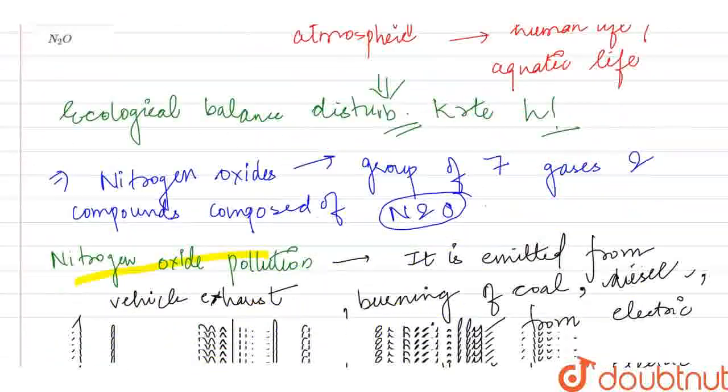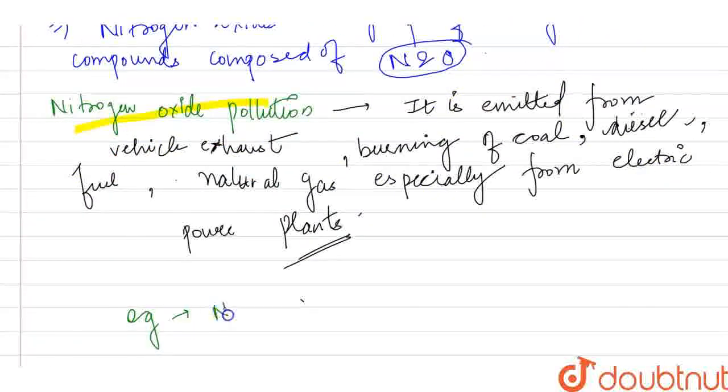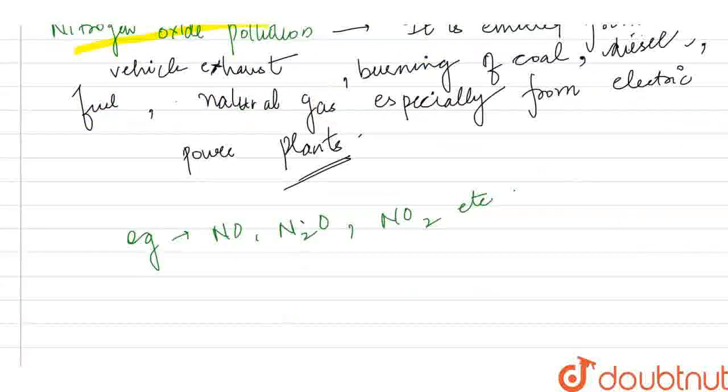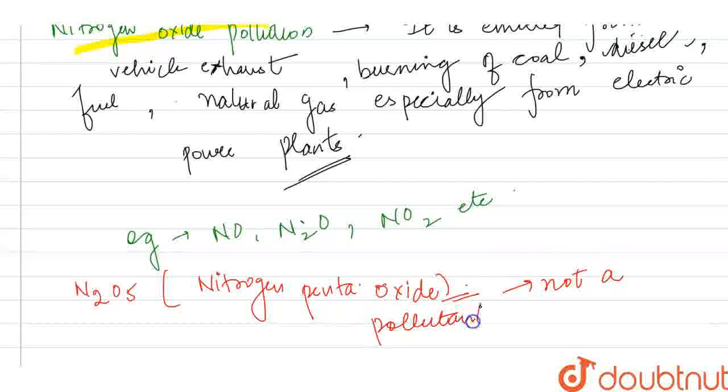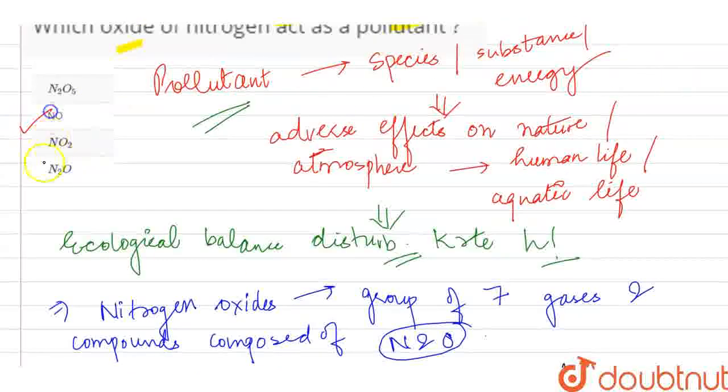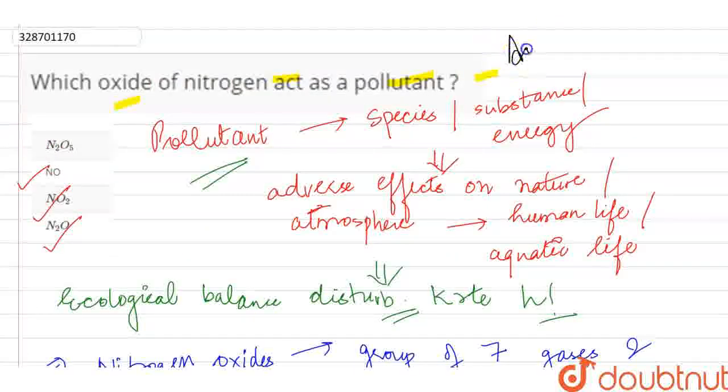If we talk about the gases, we have NO, N2O, NO2, and nitrogen penta oxide N2O5. This penta oxide is not a major pollutant. So my answer will be part C and part D for the major pollutants.